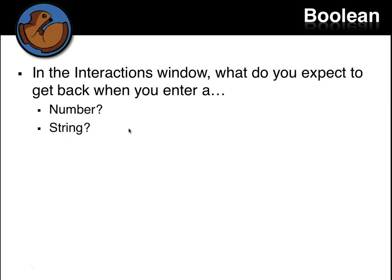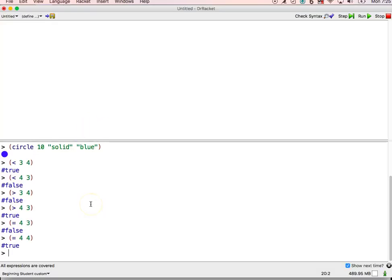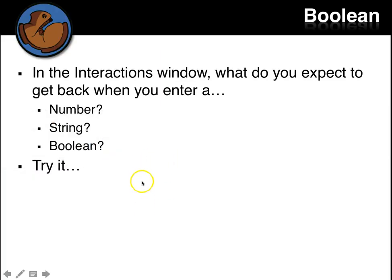So what do we expect to get back when we enter a string, a number, or a Boolean? Let's try it. So if we put in a string, we get a string. If we put in a number, we get a number. Now, they didn't tell me how to enter a Boolean, but I'm just going to do the same thing we did, the answer we got back here. So I'm just going to say pound or hash true. And I get a hash true. So that's how we can enter those. So now I want you to pause for a second. And you try entering a number, a string, and a Boolean to see what you get back.